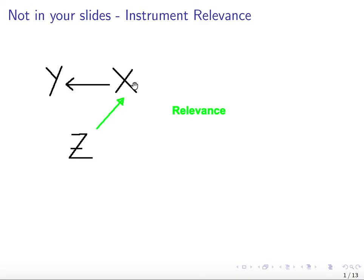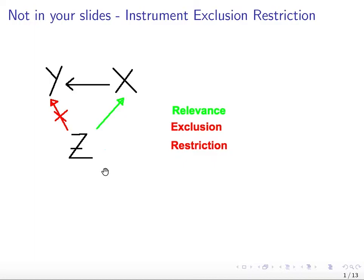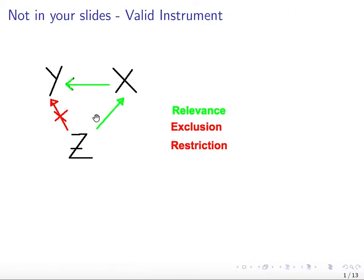We know this to be true intuitively, but more broadly, every time you want to pick an instrument, you should first make sure that relevance is high. The second requirement is the so-called exclusion restriction — z should precisely not be an omitted variable. You want z to have an effect on y only through x, and you want z to be exogenous to y.